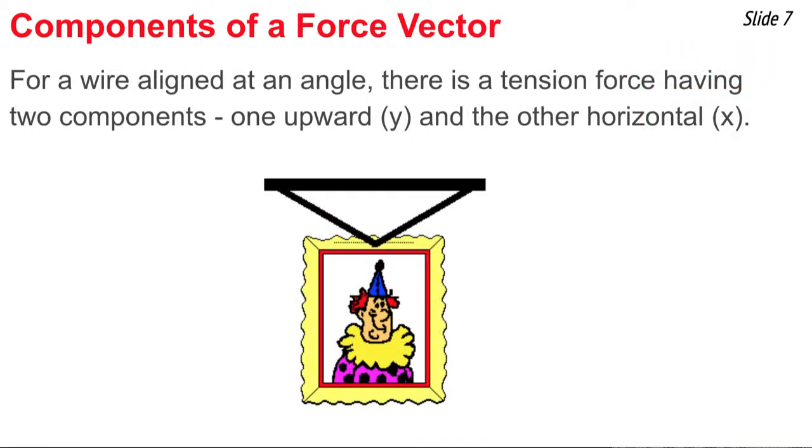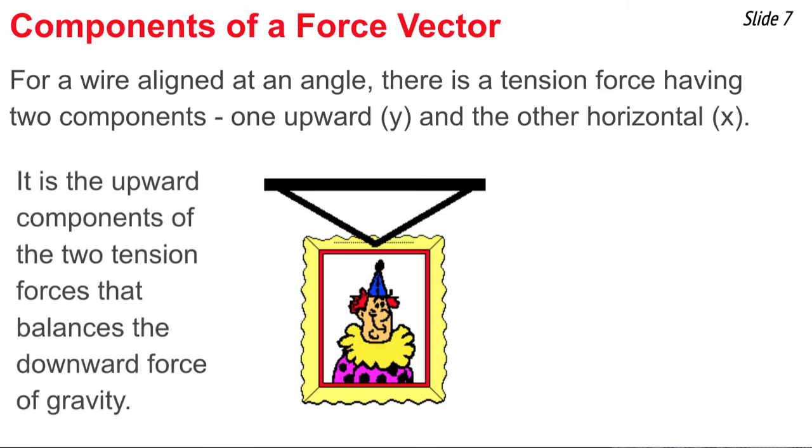So vector components describe the effect of a vector in a given direction. And here's a third example. We see a picture hung by two wires, and each wire exerts a tension force upon the picture. And being at angles to the horizontal, these tension forces have an upward and a horizontal component. And it's the upward component of these tension forces that contribute to the upward pole and thus balance out the downward force of gravity. If we think of the free body diagram on the picture, it would show two tension forces, both directed at angles to the horizontal, and then one downward force of gravity. And it's the vertical component of these tension forces that would balance out the force of gravity. The horizontal components simply balance each other out.